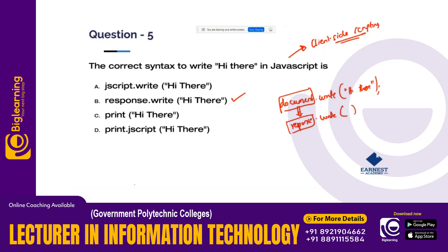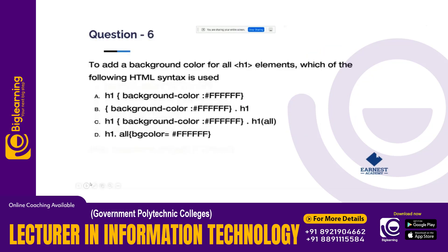To add a background color for all elements, which of the following HTML syntax is correct? The correct answer is Option A. In HTML, you use the background-color property in CSS. The background-color attribute is used in CSS for styling elements.